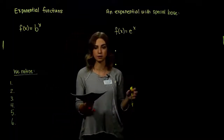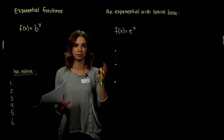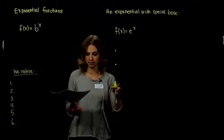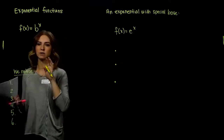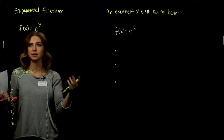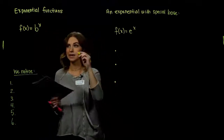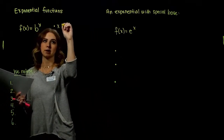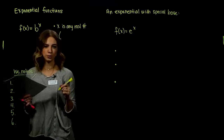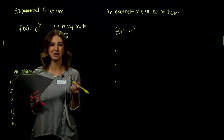We want to look at some special kinds of functions called exponentials. They grow without bound — they start pretty slowly and then grow really rapidly. The notation for an exponential function uses function notation and passes the vertical line test. It looks like b raised to the x, where x is any real number — it could be something like the square root of 5, which is still real even though it's irrational.